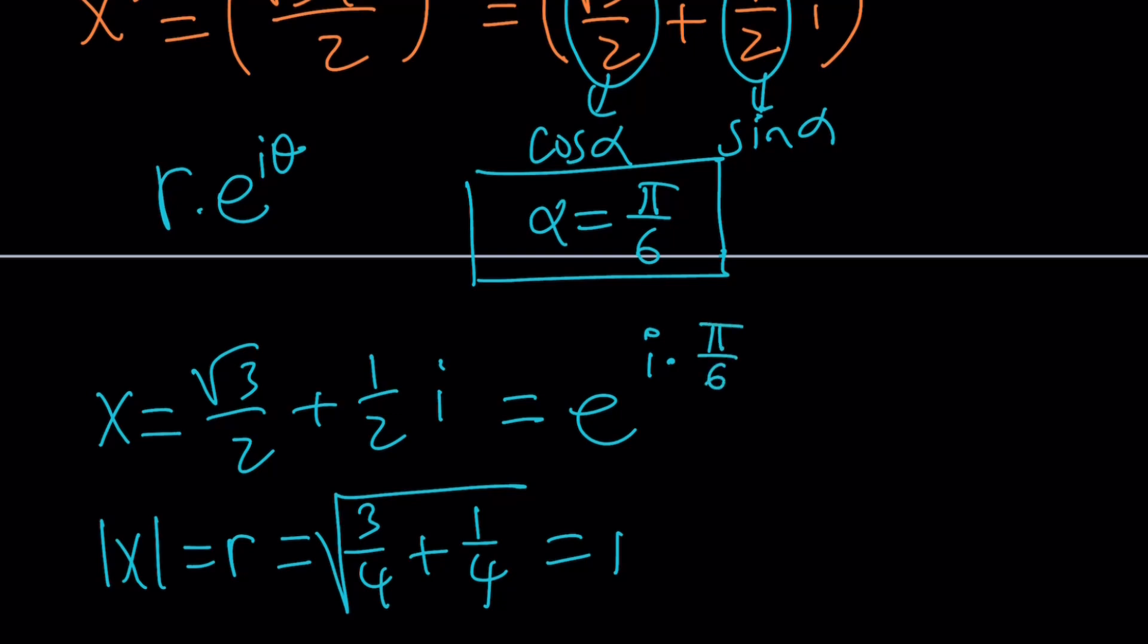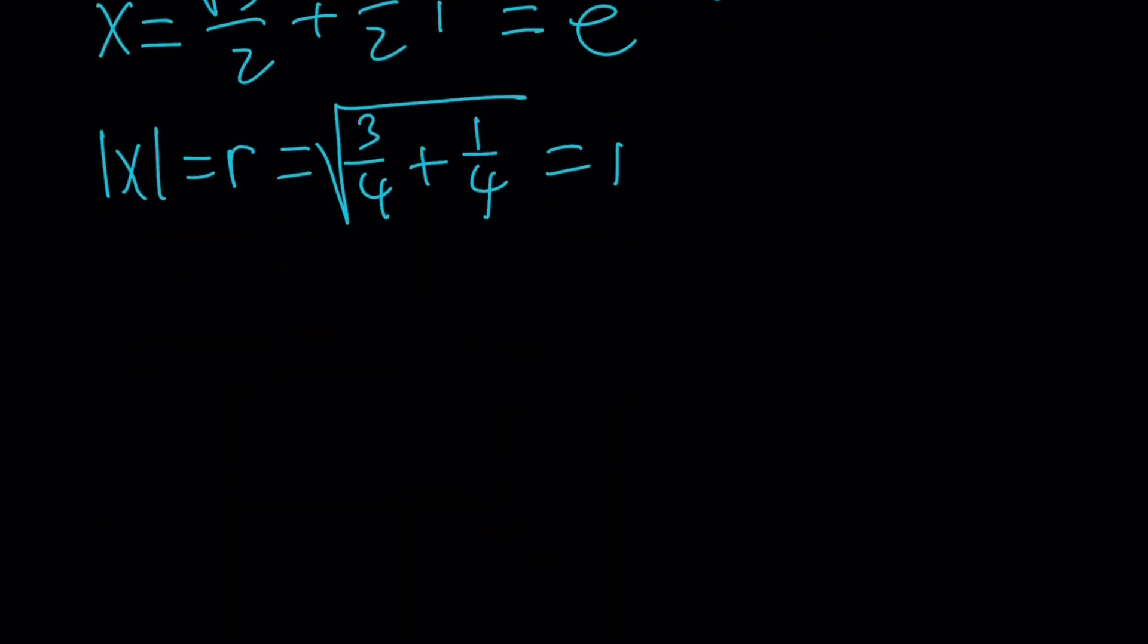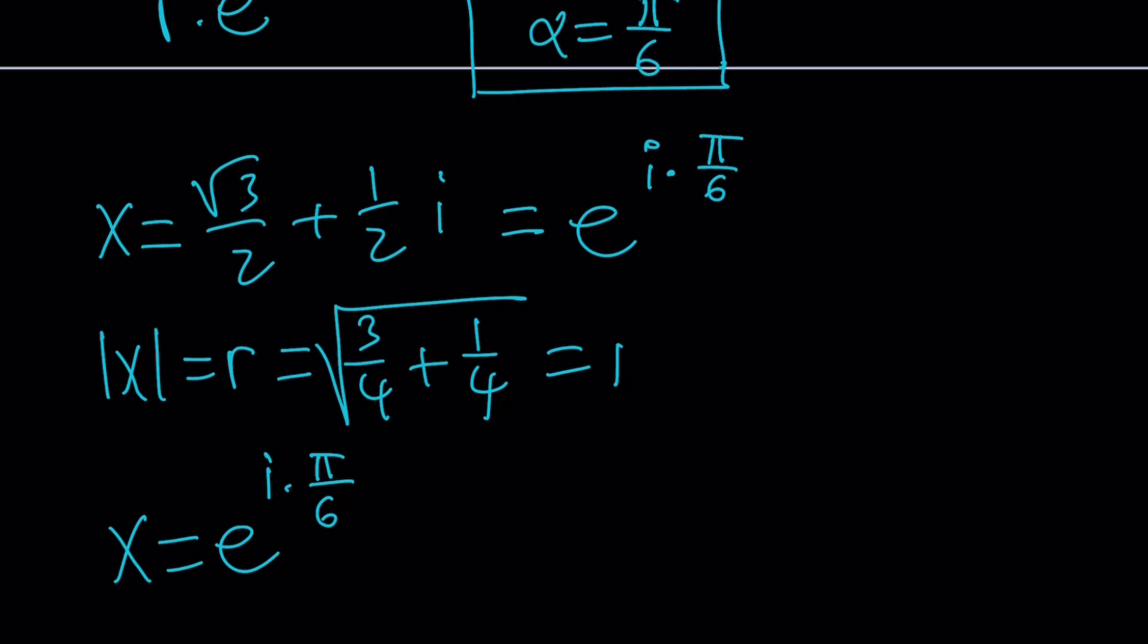That's my number. And I'm going to raise it to the 50th power and find x to the 50th power. Easy. If x equals this, then I can basically raise both sides to the 50th power by using the De Moivre's formula. Raise both sides to the 50th power and you're going to get e to the power i 50 pi over 6.